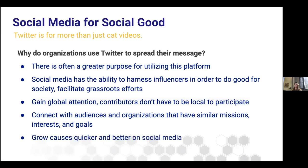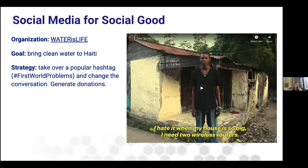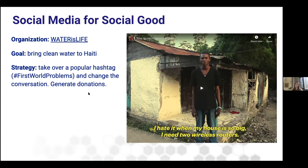Moving on to social media for social good. Twitter is more than just cat videos. Why do organizations use Twitter to spread their message? There's often a greater purpose. People want to do good, and they're taking over social media to make it an impactful channel that can change the world. Social media has the ability to harness influencers in order to do good for society and facilitate grassroots efforts. It's a low-cost channel — Twitter is free — and a great platform to get your movement out there. You can gain global attention and connect with audiences and organizations that have similar missions, interests, and goals. Now let's look at an example: the 'Water is Life' campaign, whose goal was to bring clean water to Haiti.